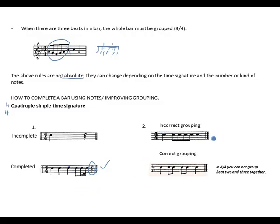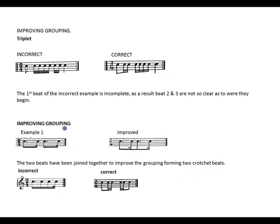This is an example of incorrect grouping in 4/4: beat 1 is correct, but beat 2 and 3 have been grouped together — they must be separated so that beat 3 is visible. The correct grouping shows beat 1, beat 2, then an imaginary barline between the beats. In 4/4 you cannot group beat 2 and beat 3 together.